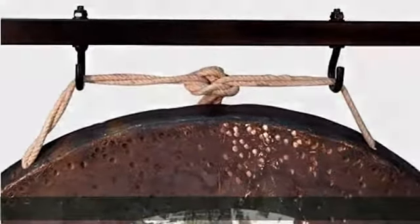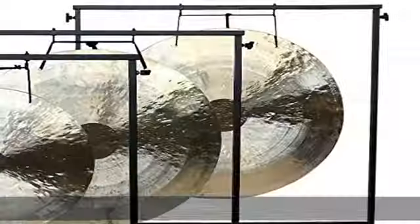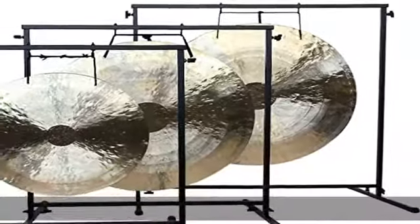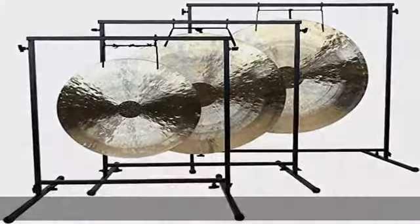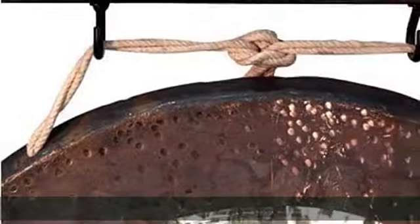Wind gongs are B20 bronze gongs produced with 80% copper and 20% tin. Wind gongs produce a variety of overtones, from high to low frequencies. Smaller sizes have a higher pitch and less power while the larger sizes are deeper and richer, with a long sustain.